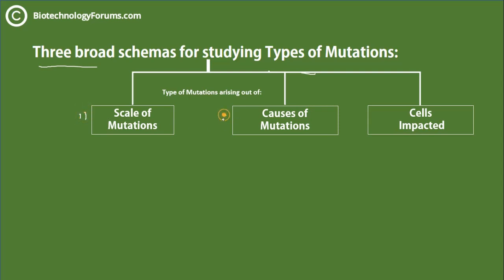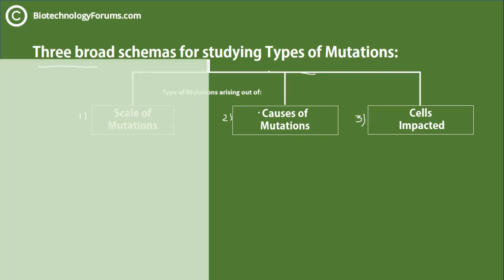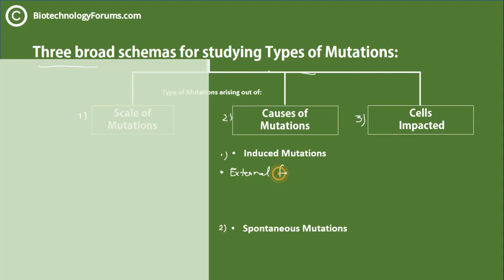Based upon these three classification schemas, you get all the types of mutations. Let's start with the causes of mutations. On the basis of causes, you have two types: one is induced and the other is spontaneous. As the name suggests, induced mutations are those caused by some external factor — there is always an external trigger, which can be a chemical, radiation, or an infectious agent.